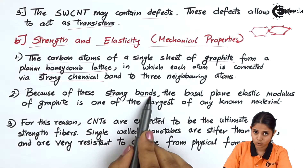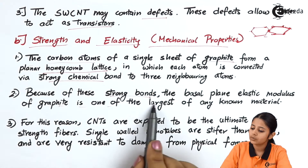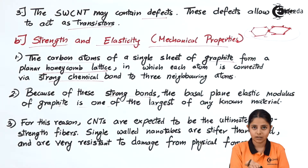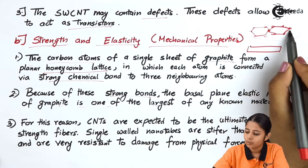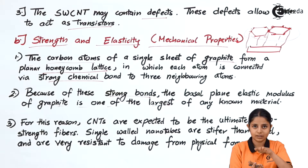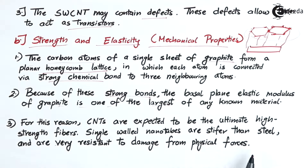Because of these strong covalent bonds, the basal plane elastic modulus of graphite is one of the largest known to any material. Graphite layers are attached to each other by weak bonds known as van der Waals forces, and the layers can glide against each other without breaking. For this reason, carbon nanotubes are expected to be ultimate high-strength fibers. Single-wall nanotubes are stiffer than steel and are very resistant to damage from physical forces.